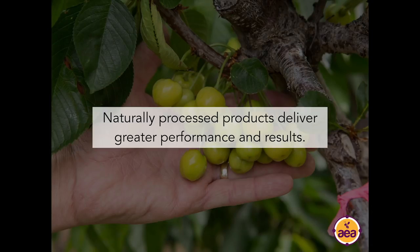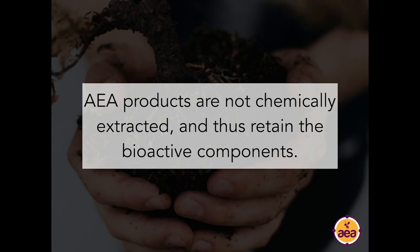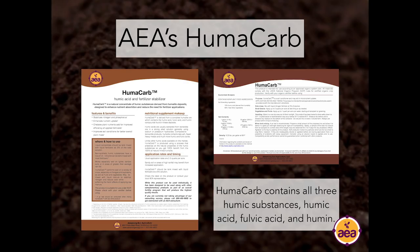What differentiates our product, Humicarb, from other products in the marketplace is that we do not extract it chemically. We retain all the bioactive components that are denatured by the potassium hydroxide and acid extraction process. So Humicarb still contains all three of the original components — the humic acid, the fulvic acid, and the humin — all combined in the natural complex as they are found in the original Leonardite ore.